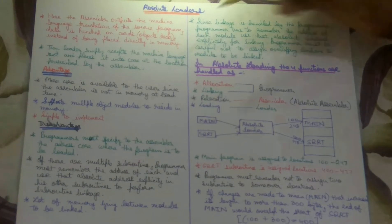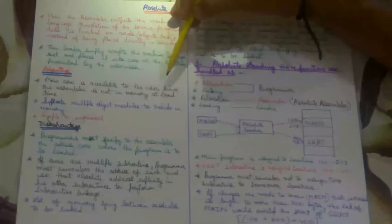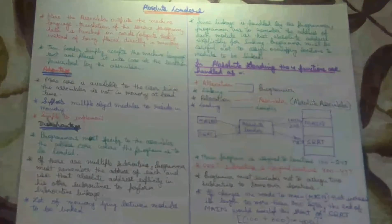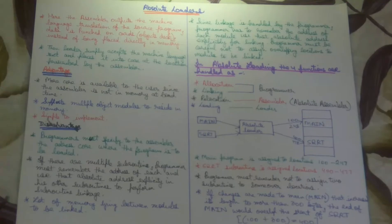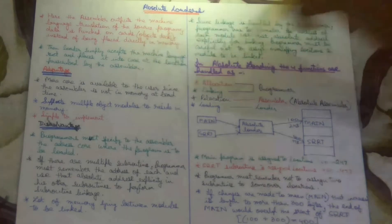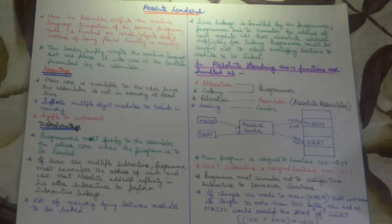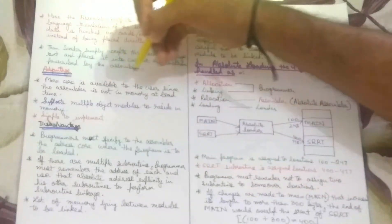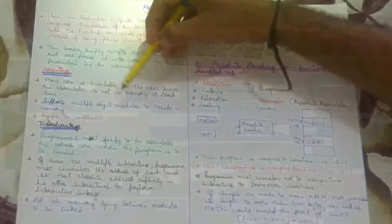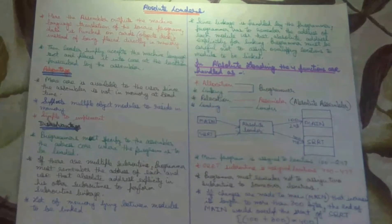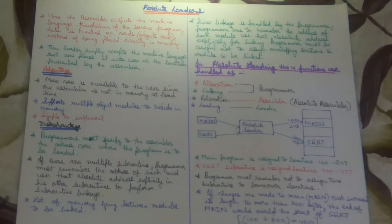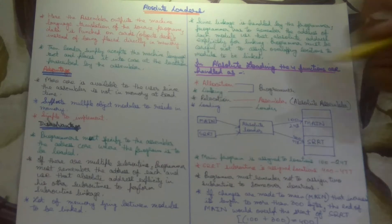What are its advantages? More code is available to the user since the assembler is not in the memory at load time. In compile and go loaders, the assembler is placed in memory. Here much more space is available and more core is present. Next, it supports multiple object modules to reside in memory. Absolute loaders allow multiple object modules, unlike the general loader scheme. It is simple to implement.